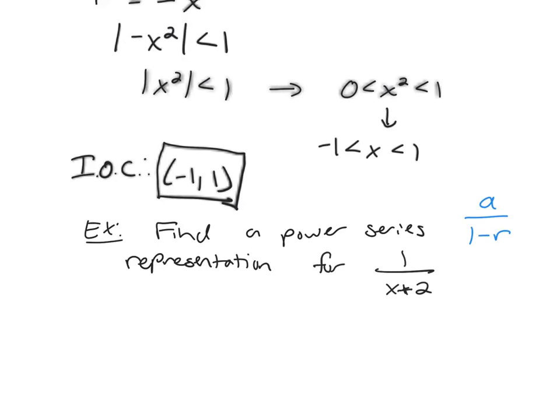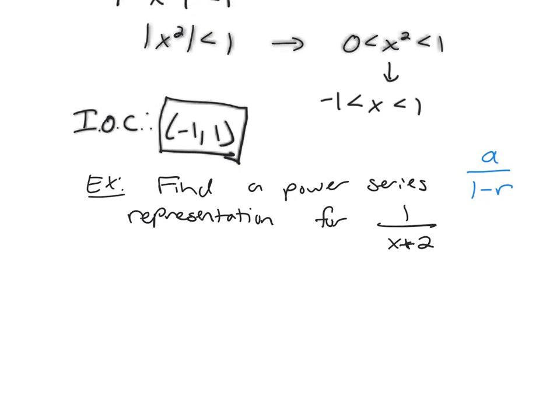So the first thing I'm going to do is I'm going to interchange the x and the 2, which I can do because addition is commutative. x plus 2 is the same thing as 2 plus x, so I'm going to switch it around and write it as 2 plus x.